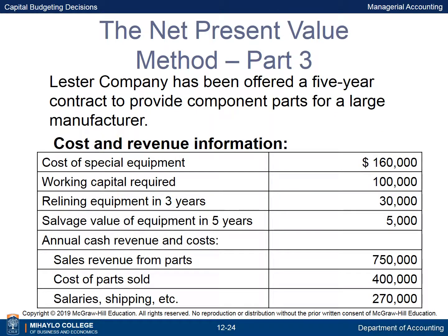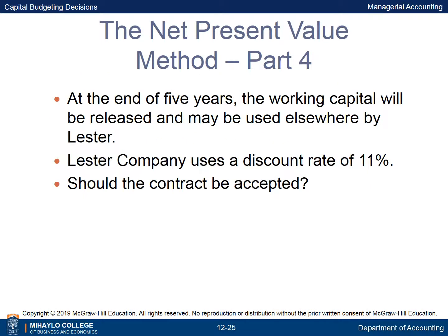Lester Company has been offered a five-year contract to provide component parts for a large manufacturer. At the end of five years, the working capital will be released and may be used elsewhere by Lester. Lester Company's discount rate is 11%. Should the contract be accepted?